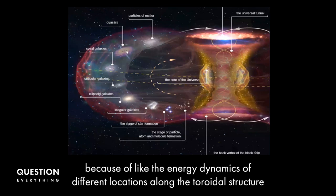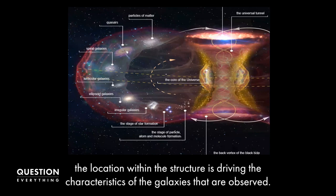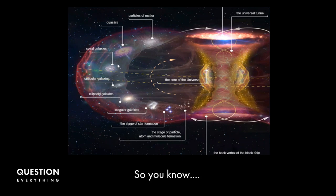because of the energy dynamics of different locations along the toroidal structure, you get the formation of quasars. So it's actually like the location within the structure is driving the characteristics of the galaxies that are observed.